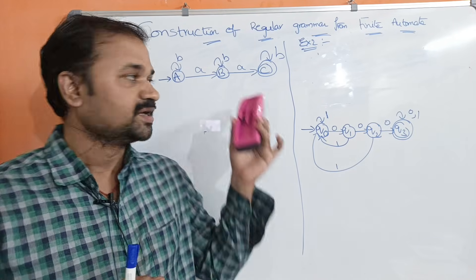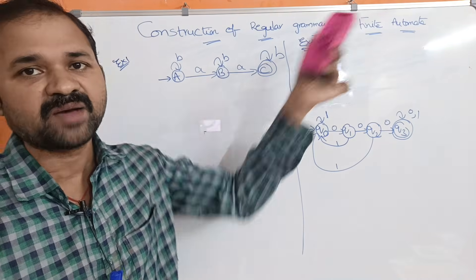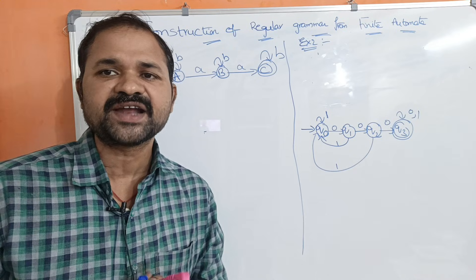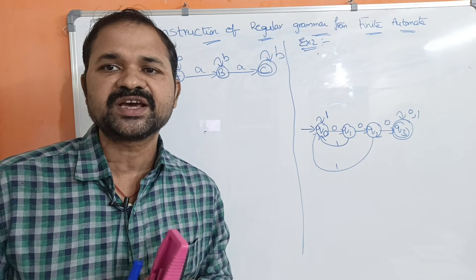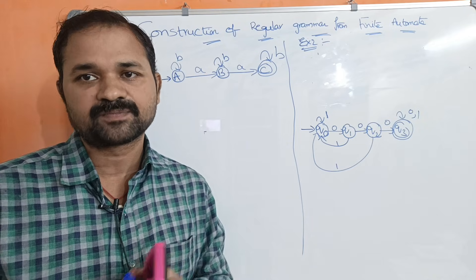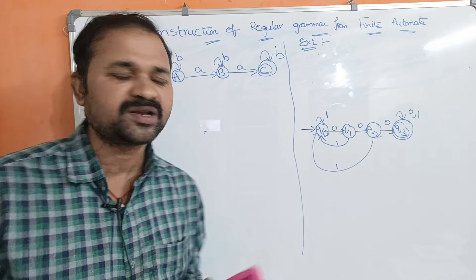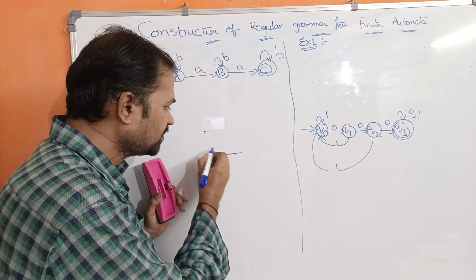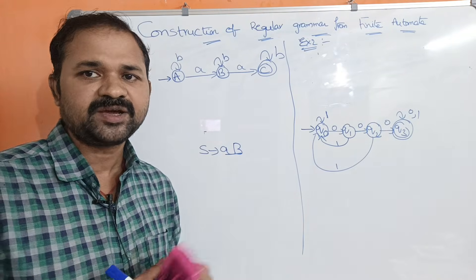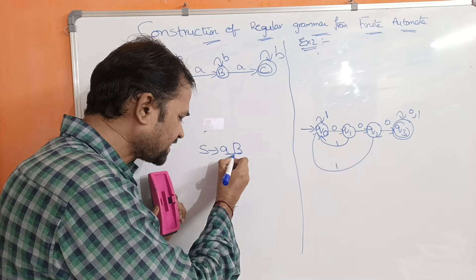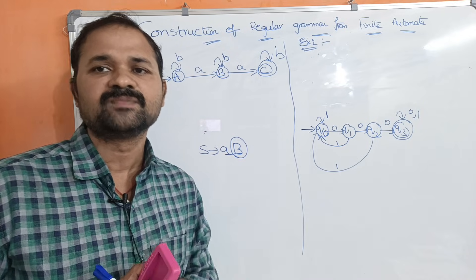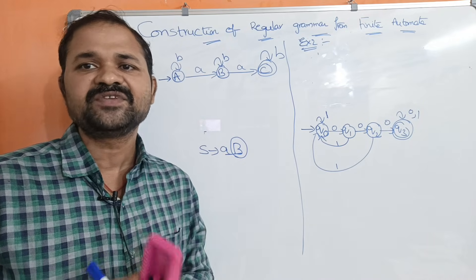Let us discuss the construction of regular grammar from finite automata. Regular grammar by default is right-linear grammar. In right-linear grammar, a production like S implies aB is right-linear because on the right-hand side the rightmost symbol is a non-terminal. If the rightmost symbol is non-terminal in each production, then it is a right-linear grammar.